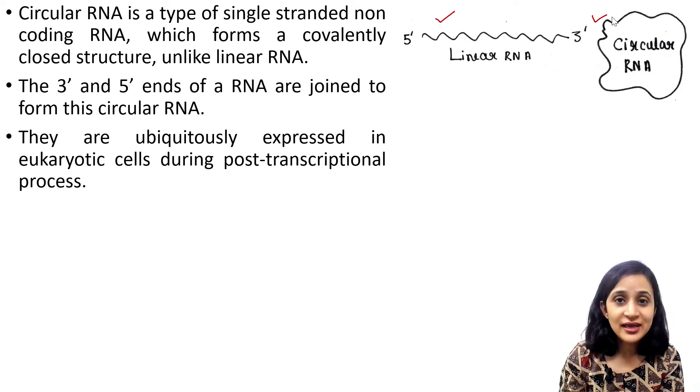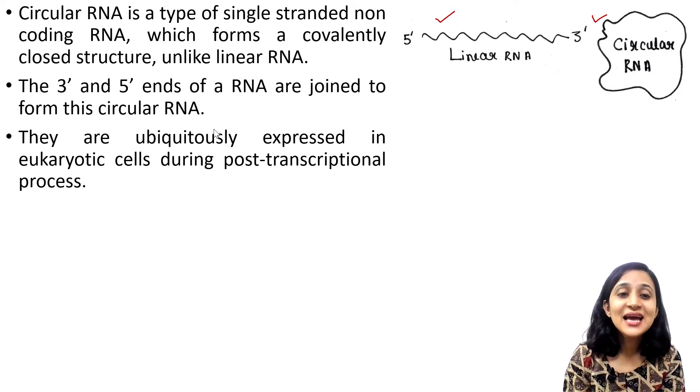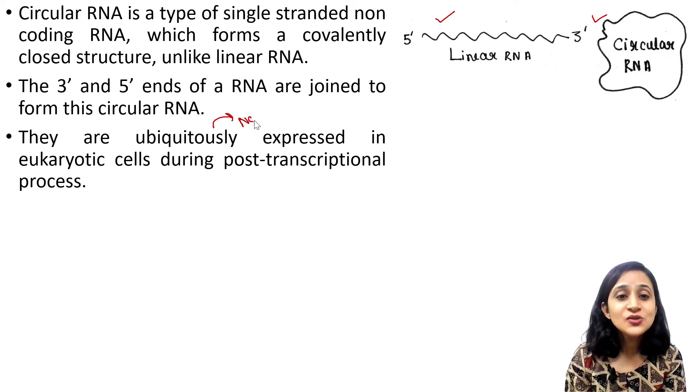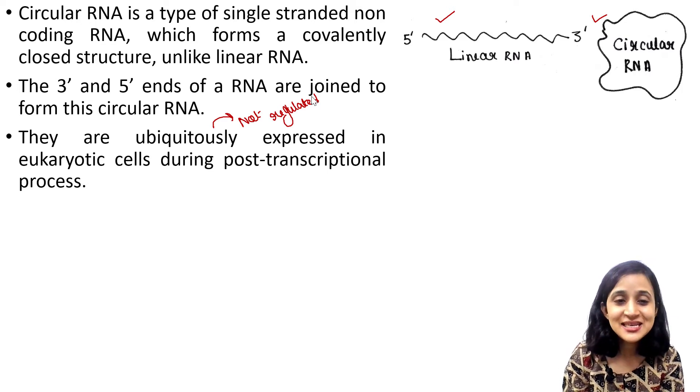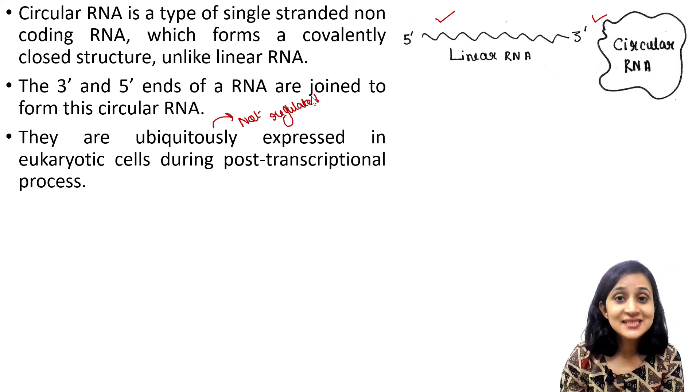They are ubiquitously expressed in eukaryotic cells during post-transcriptional process. That means they are continuously expressed and not regulated. They are continuously and randomly expressed in eukaryotic cells during post-transcriptional process. That means after transcription, after the formation of mRNA.